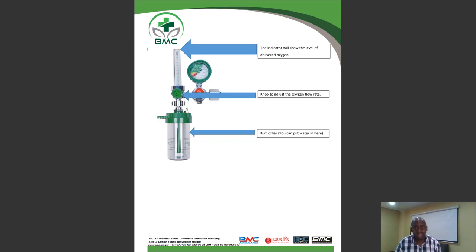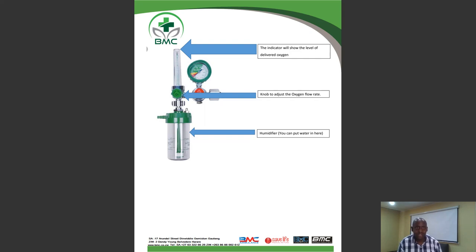One of the key things we need to talk about is this device here — this is called a regulator. As you can see, I've got three arrows there. The first one is showing you the silver ball, which is an indicator. You use the green knob at the bottom to adjust your oxygen flow — turn it up to increase, turn it down to decrease. It has markings on the side telling you the amount of oxygen you're delivering. This part is the humidifier where you put water so that you do not give dry oxygen. If you forget the water, the body generates excess mucus and you won't achieve your desired result.